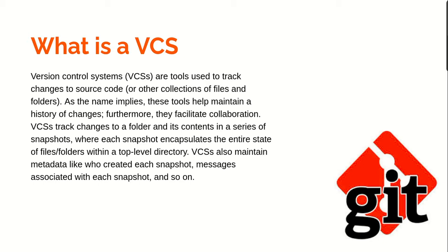Git has a sort of a tree directory, and the snapshot reflects the tree structure. Other version control systems just look at files — they do timestamps of files and that sort of thing. Git takes a snapshot of the whole tree structure of files and folders, and it is capable of regenerating the same. Version control systems also maintain metadata like who created each snapshot, messages associated with each snapshot, and so on — viewable via what we call logs.